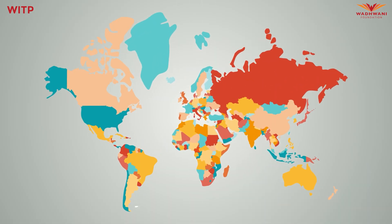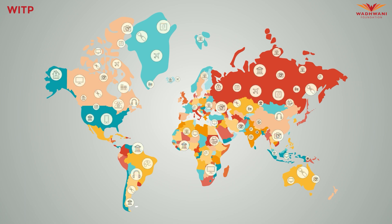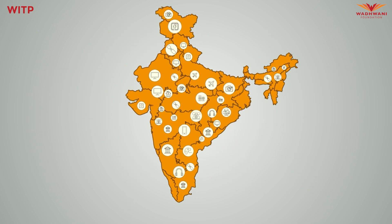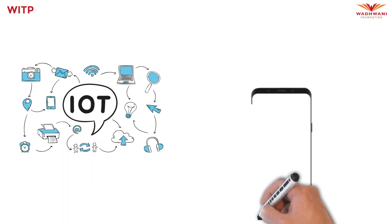Here are some interesting facts about IoT. There are more IoT devices than humans today. We have more than 46 billion IoT devices as per Juniper Research, compared to around 8 billion human beings. Even in India itself, we have over 2 billion IoT devices as per NASSCOM, which is 50% more than the number of Indians — a very interesting and huge number of IoT devices.